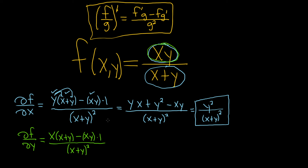To go over that again: the derivative of the top is x (since the derivative of y is 1), times the bottom, minus the top times the derivative of the bottom, which is just 1, over the bottom squared.